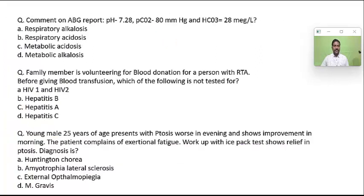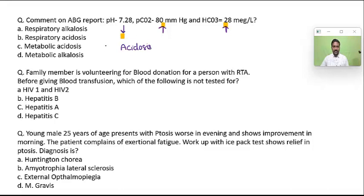Comment on the ABG given: pH is reduced, PaCO2 is increased, bicarbonate is increased. Stepwise ABG approach: first see the pH — it is decreased, so acidosis. Second step: notice the change in pH with respect to parameters. Using the ROME principle — in respiratory, change in pH with respect to parameters is in the opposite direction. Since the change is in the opposite direction, the primary disorder is respiratory. The best answer is respiratory acidosis.